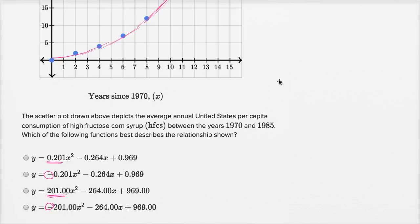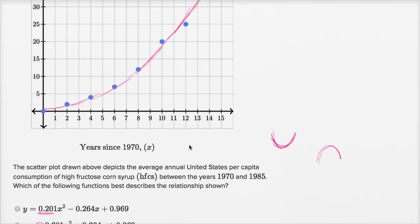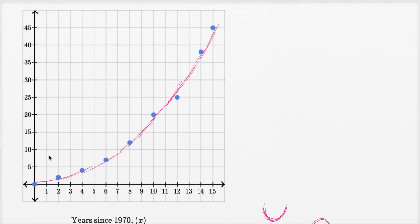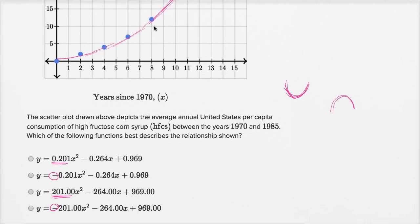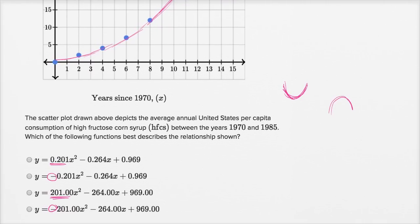Well, if you have a positive coefficient on the highest degree term, on the second degree term, and if we're talking about a quadratic, you're going to have an upward opening parabola. And if you had a negative coefficient, it would be a downward opening parabola. And what we have here is clearly the right half of an upward opening parabola. So we could rule out the ones that have a negative coefficient on the second degree term. Let's rule those out.